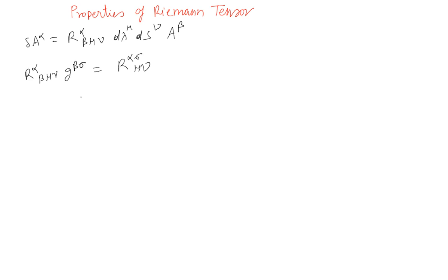So let's say you don't want to use the contravariant component of the element ds, you want to use the covariant element. Then in that case you can write this as R alpha sigma mu nu, actually R alpha nu beta.